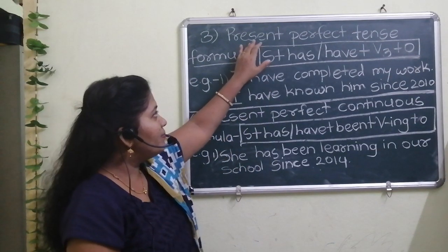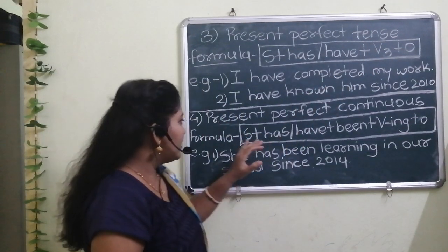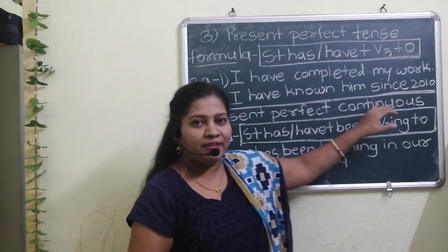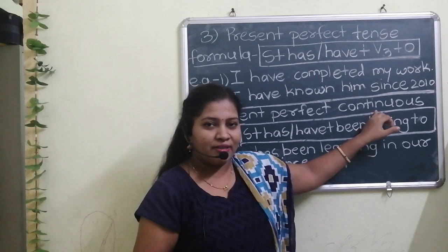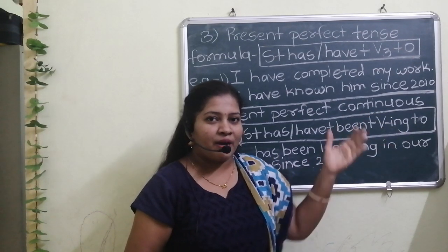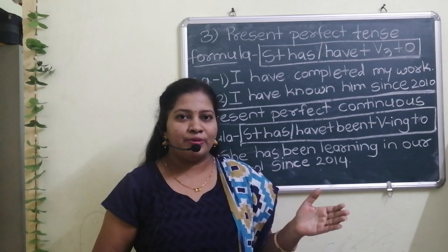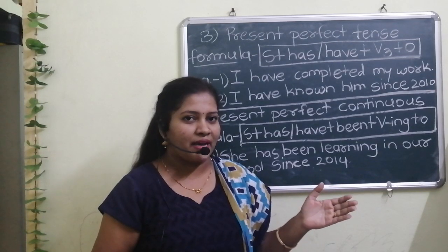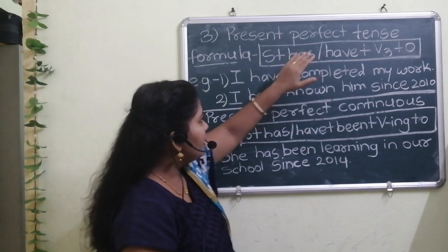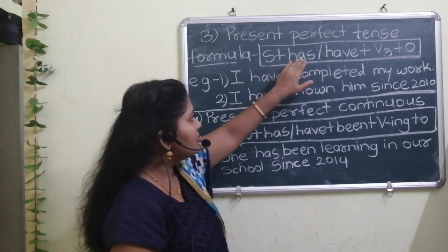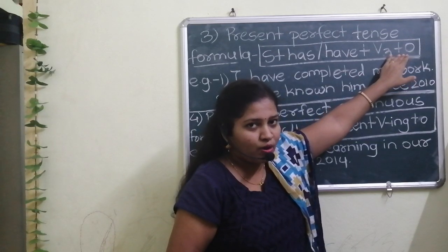The first one is the present perfect tense, and the second is present perfect continuous tense. First of all, we have to go towards the formulas of these subtypes. The formula of present perfect tense is: subject plus has/have plus V3 plus object.